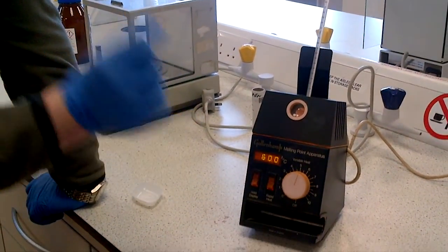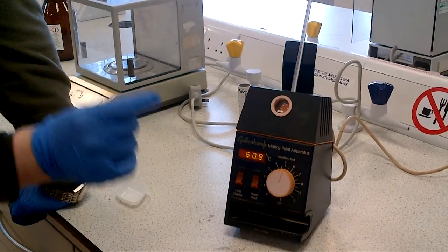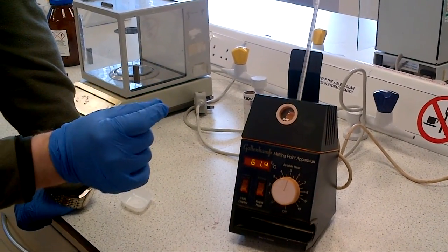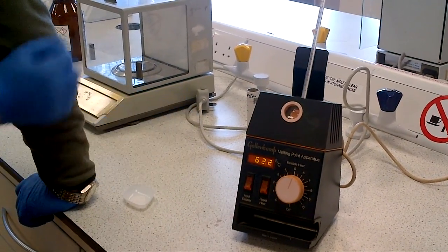So that is your range of melting point. Do a rough one, then let it cool, do a second one, maybe a third one, to get a good estimation of your melting point, and that concludes this instruction guide of how to use the melting point apparatus, thank you.